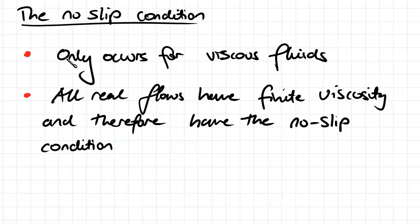So this only occurs for viscous flows, so we have to have some viscosity in our fluid. And all real flows have finite viscosity and therefore have the no-slip condition. So this is something that does happen practically.